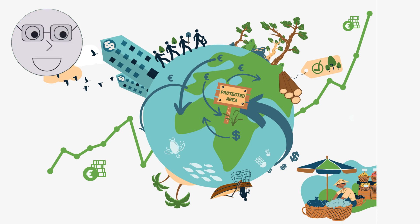Biodiversity refers to the variety of life forms that exist on earth, from the tiniest microorganisms to the largest mammals. It encompasses all living organisms including plants, animals, fungi and bacteria, as well as the ecosystems in which they live.